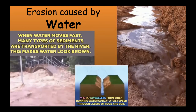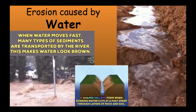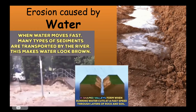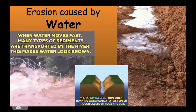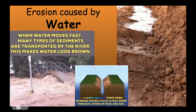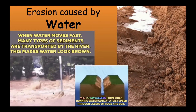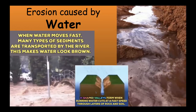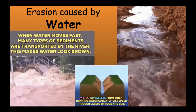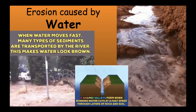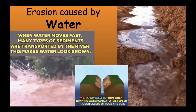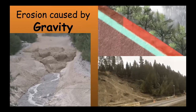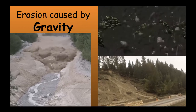Water can move sediment. In flooded areas you can see that the water is a murky brown color, indicating sediment being carried away. Running water or moving water can create deep V-shaped valleys. These are other landforms created through water erosion. Erosion can also be caused by gravity — that force that pulls things down.